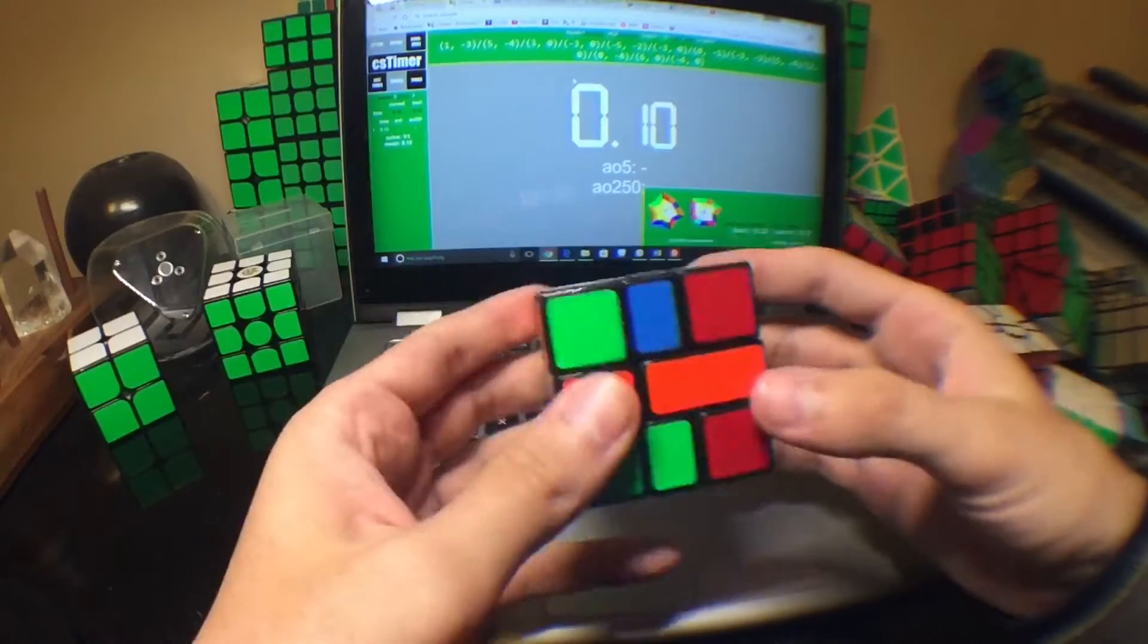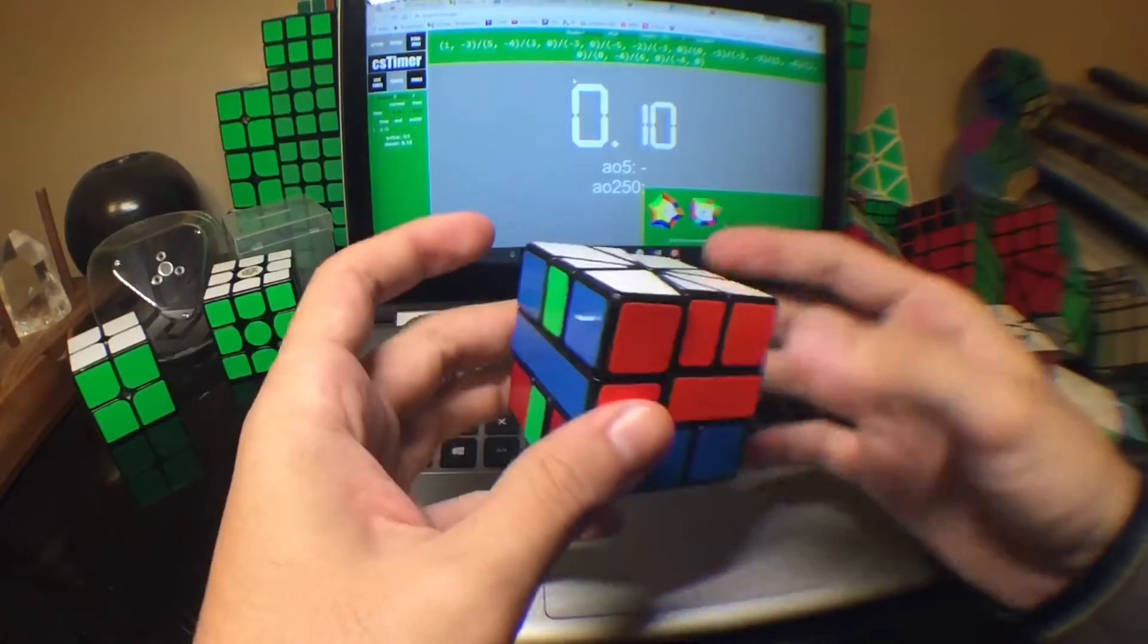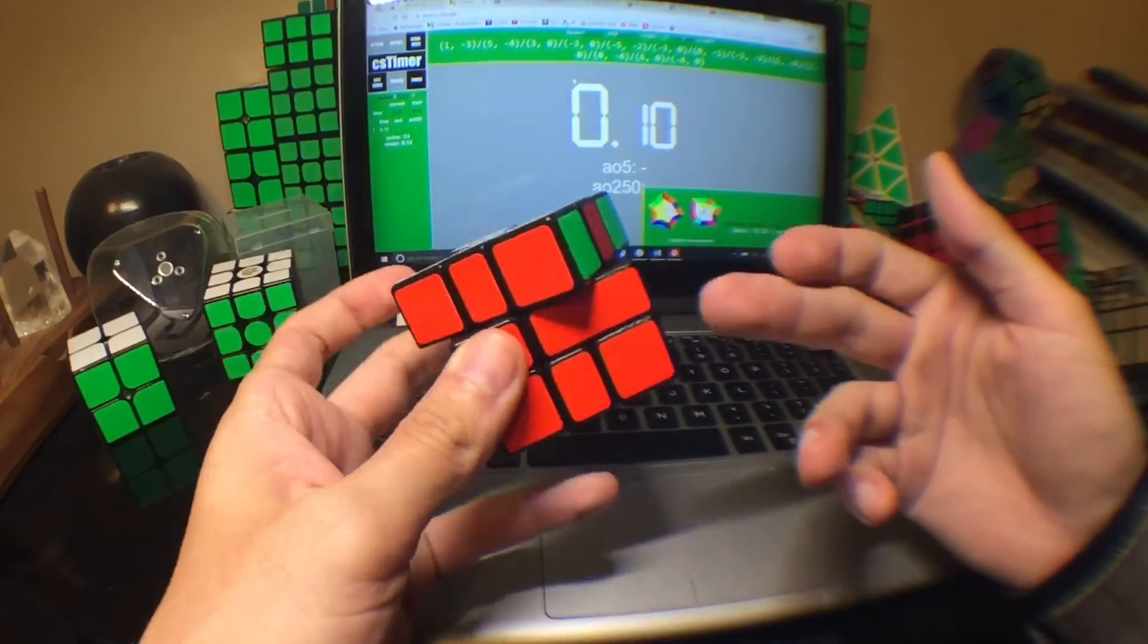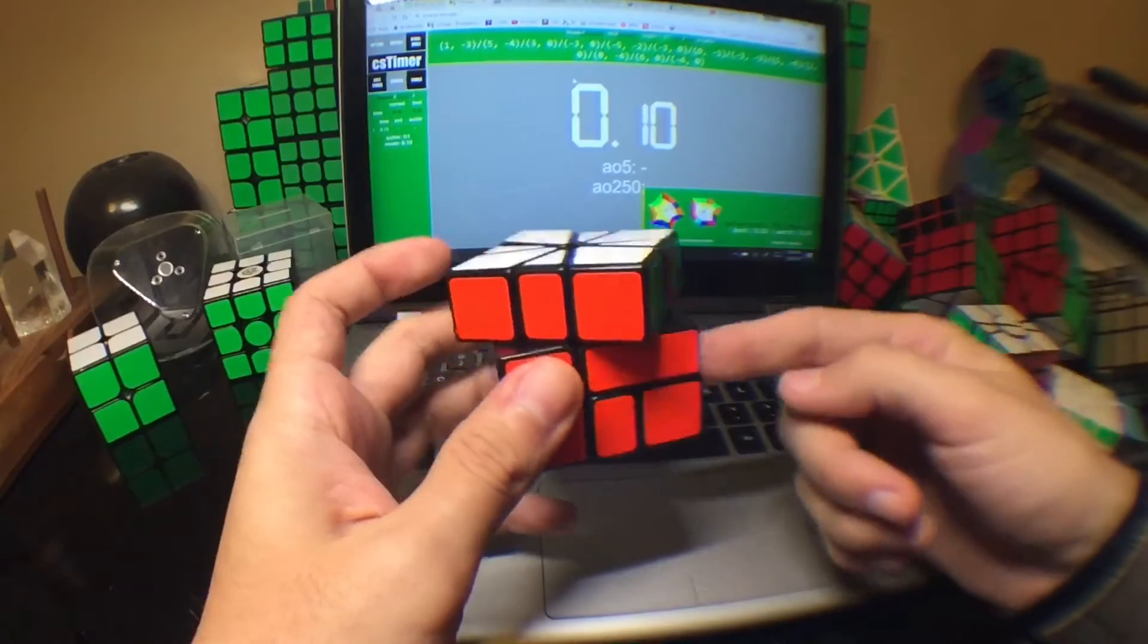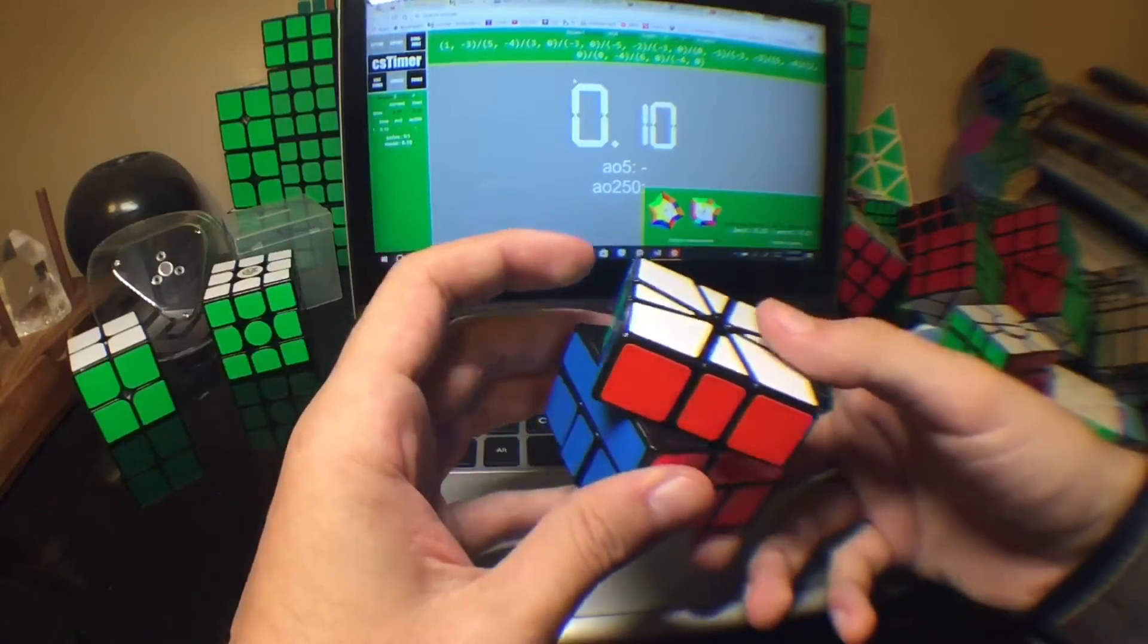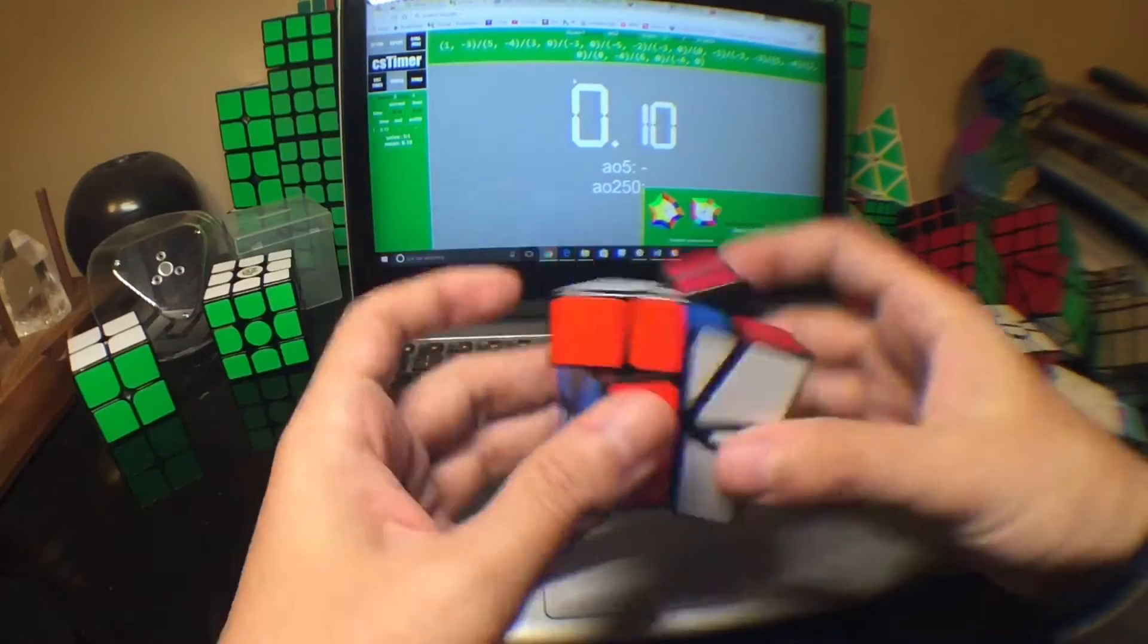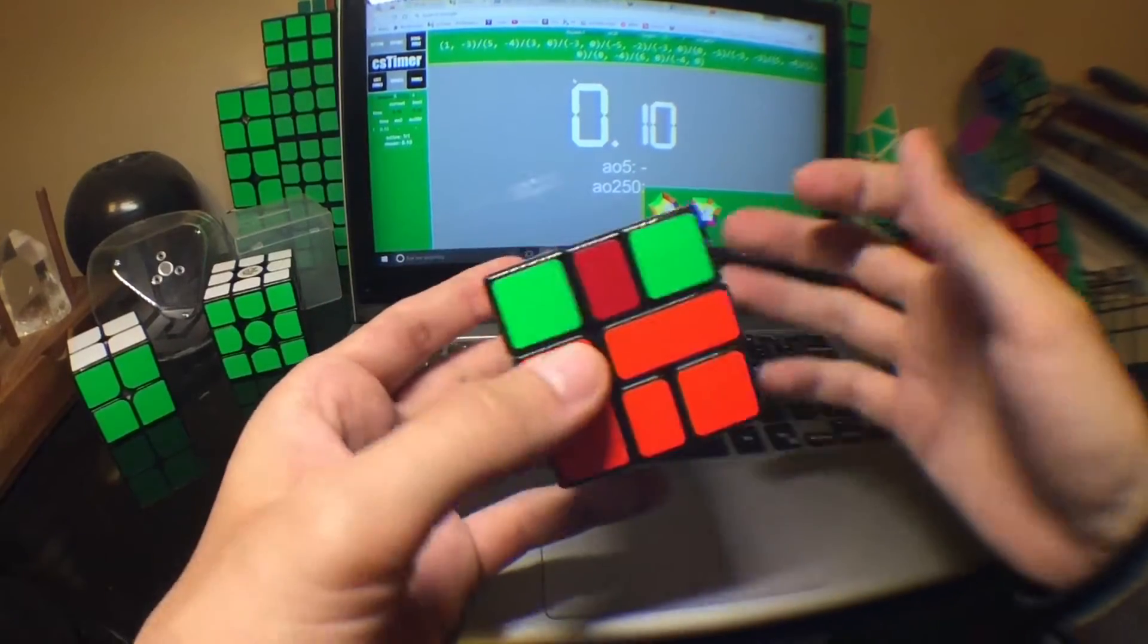And I don't know this case, I probably should by now. It's a U-perm on top and an adjacent on bottom. I typically do the adjacent where you have an adjacent here and an adjacent here, and I would just put the opposite edge right there and the adjacent back here. Doing the adjacent-adjacent algorithm would give me an adjacent parity on top.